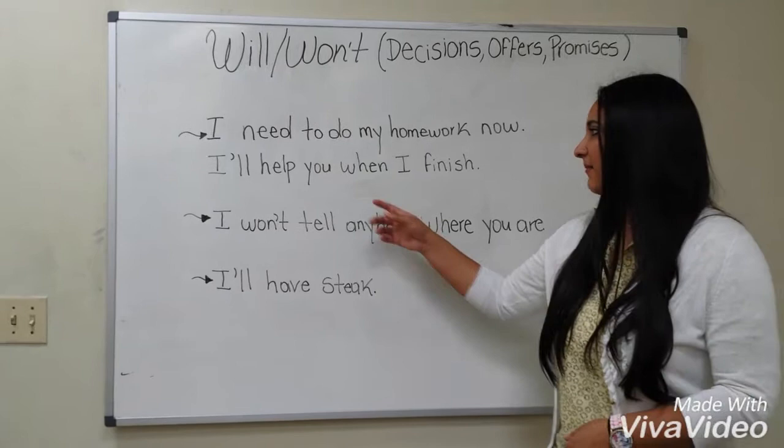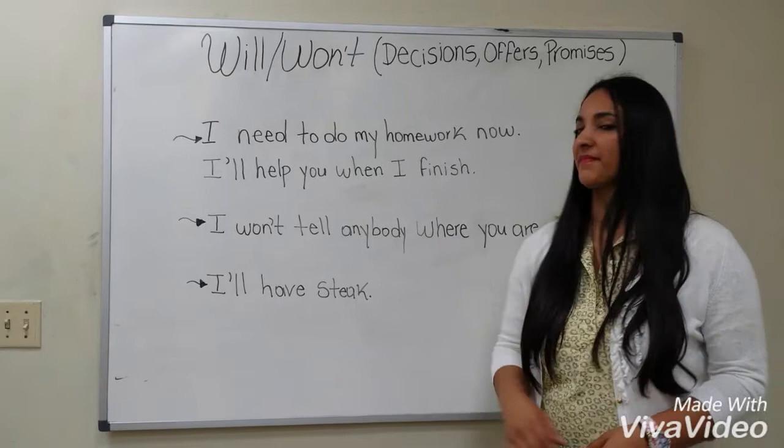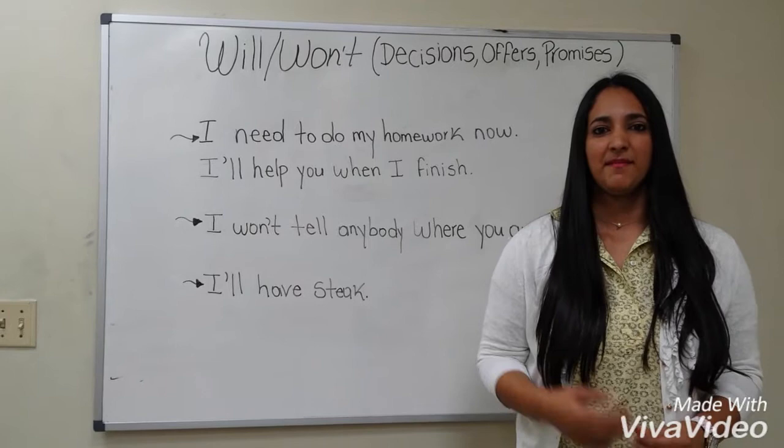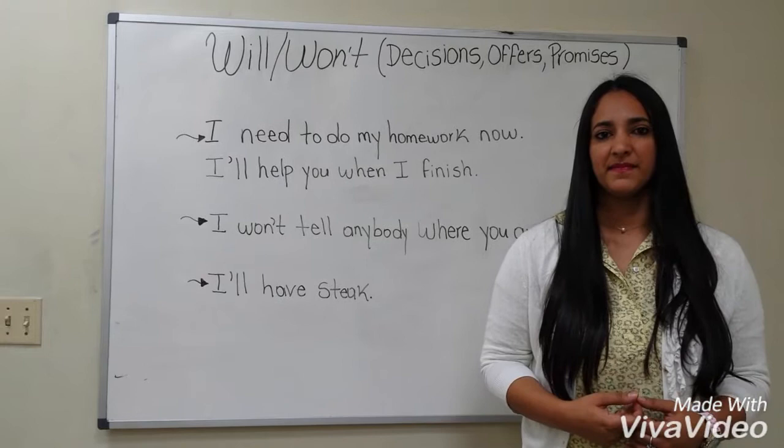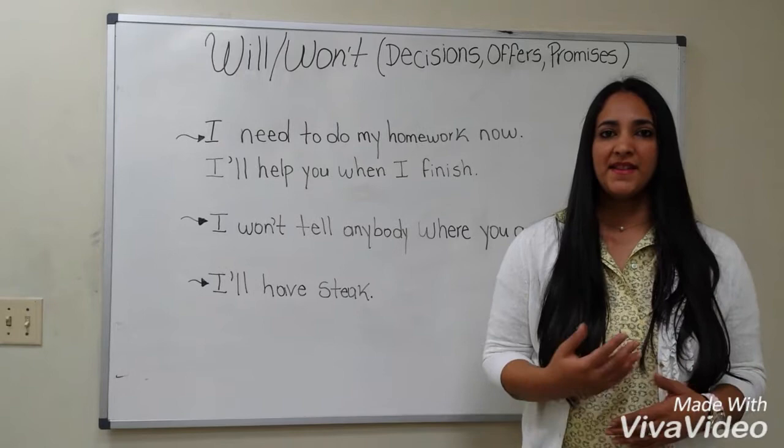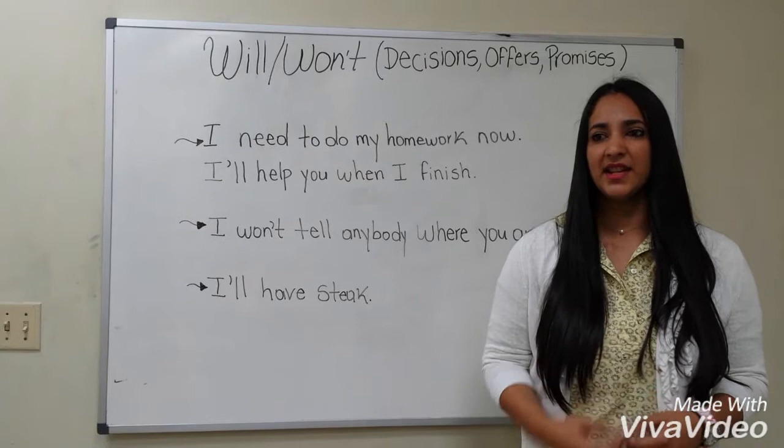The second example is: I won't tell anybody where you are. What do you think this is? It's a promise. A promise is something you commit to finally do. For example, Maria says, I need to tell you something — I'm pregnant, but my parents don't know anything. Maria's friend promises she won't tell anybody.